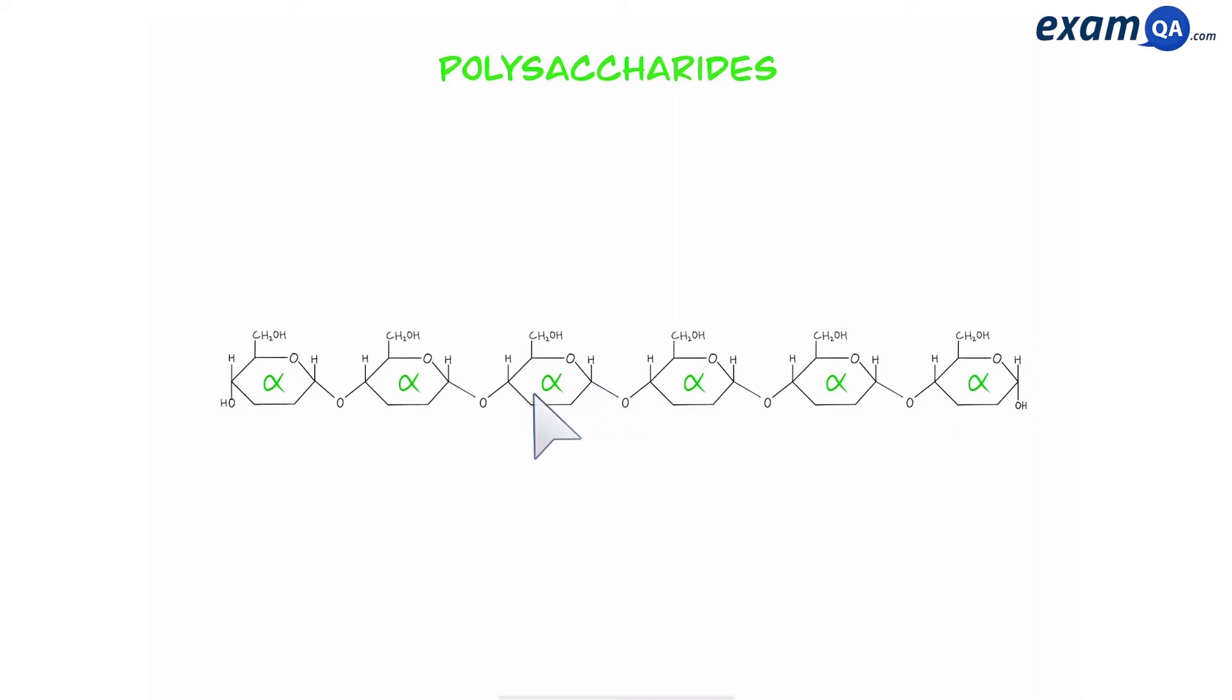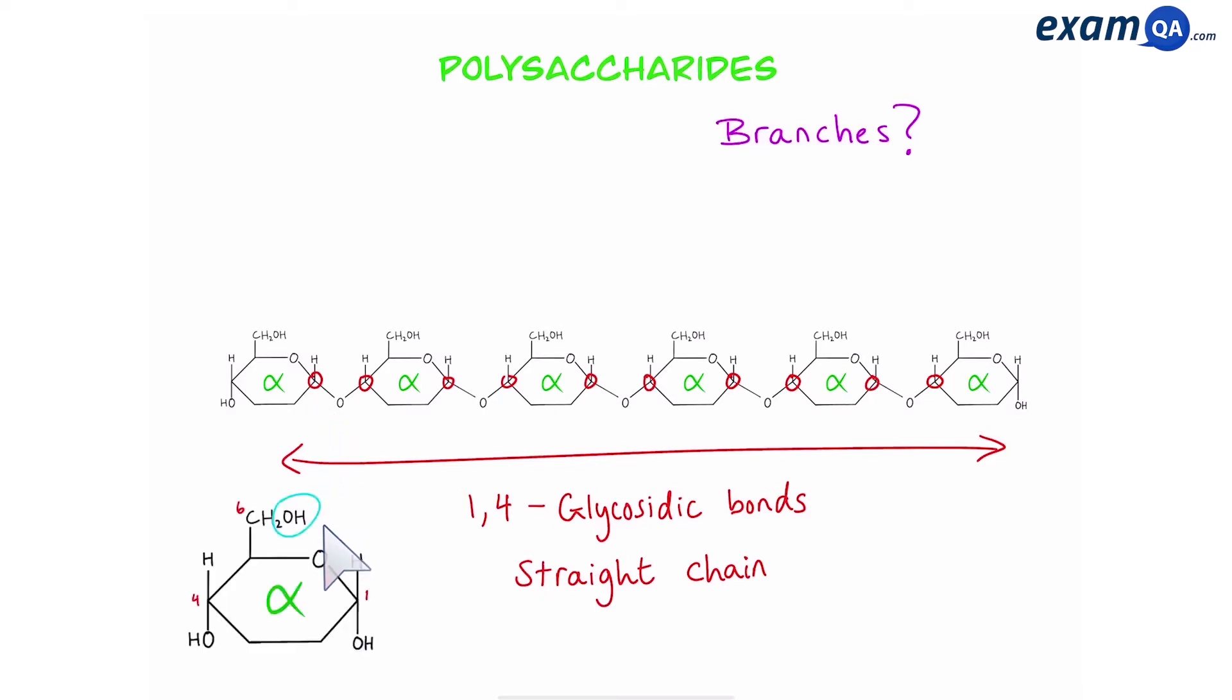So right now here we have a straight chain of alpha glucose molecules joined together by 1-4 glycosidic bonds between carbons number 1 and 4. So this is a straight chain, there are no branches visible right now. What causes the branches? Well if you remember we said that in glucose there are three important carbons: number 1, number 4, and number 6, and it's number 6 that's going to be helpful when forming branches.